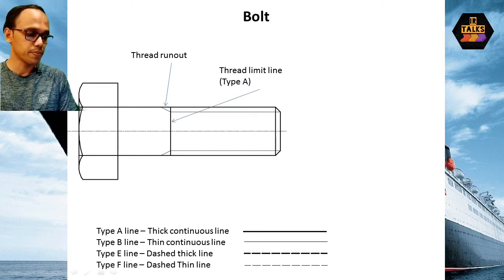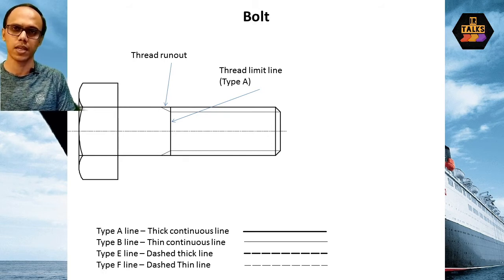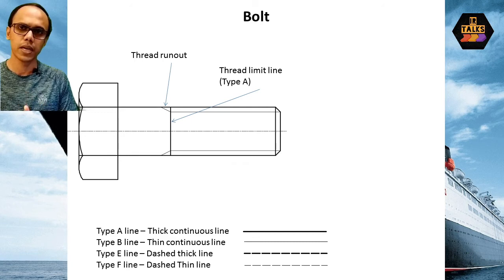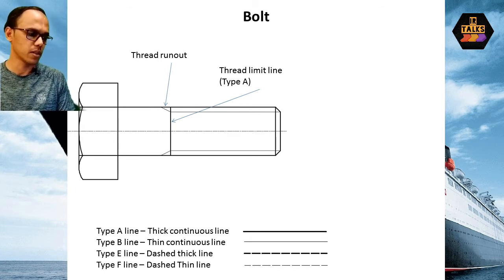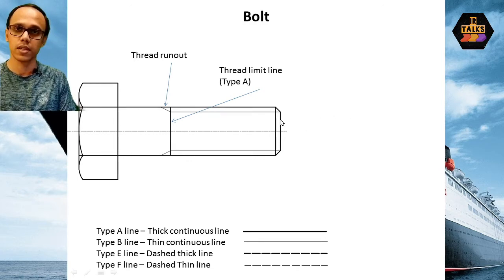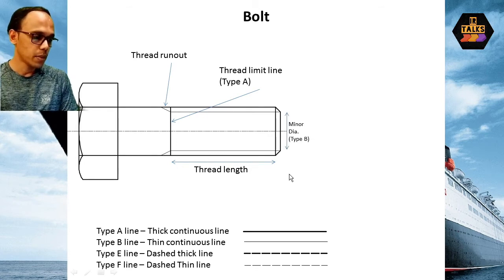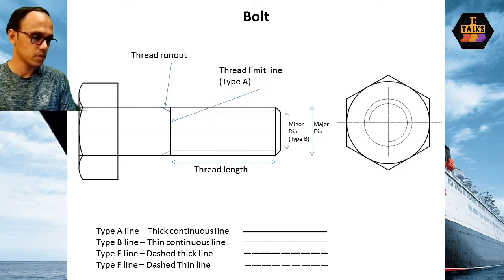Then there is a thread limit line. Then we start running out — that is a type A line. Thread minor diameter — here is the length line, working at the root line passing through the imaginary region. Thread limit line is type A line. This will be made for the chamfer. If we have run-out here, that makes the chamfer. The chamfer limit has a vertical line — that is also type A line. Then the thread length is indicated, and the minor diameter is type B line. This is the major diameter.